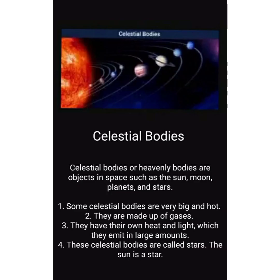Now we will come to celestial bodies. Celestial bodies are also known as heavenly bodies and they are objects in space. Simple examples of celestial bodies are the Sun, the Moon, planets and stars. Some celestial bodies are very big and hot, made up of gases, and they have their own heat and light which they emit in large amounts. These celestial bodies are called stars.